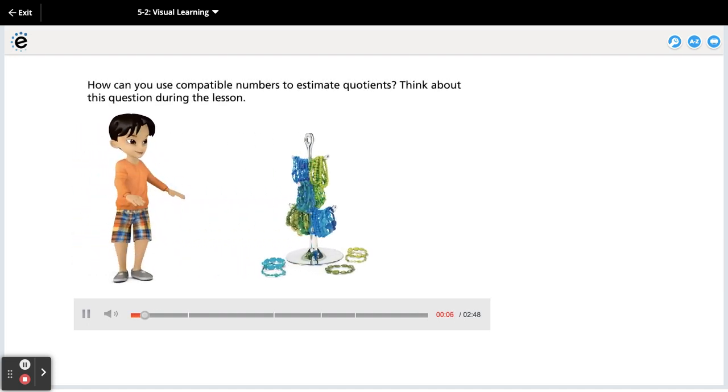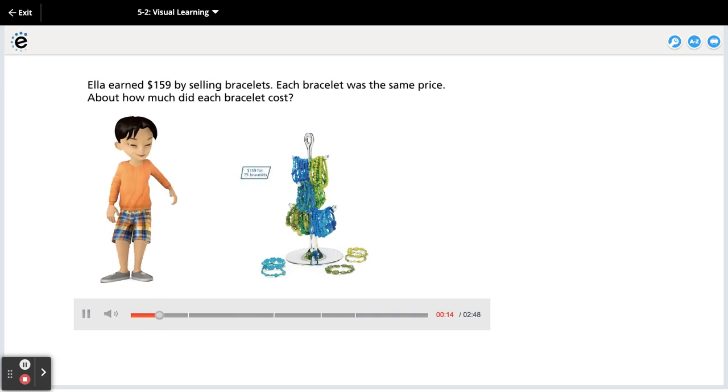How can you use compatible numbers to estimate quotients? Think about this question during the lesson. Ella earned $159 by selling bracelets. Each bracelet was the same price. About how much did each bracelet cost?